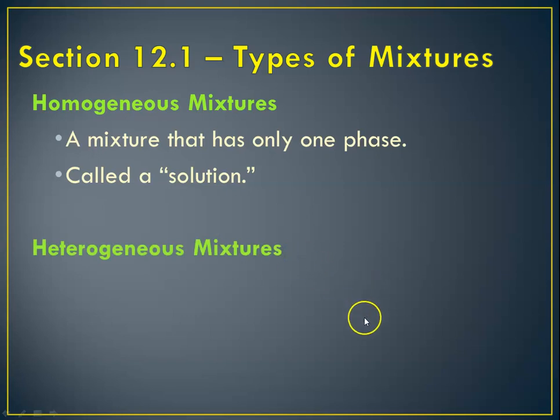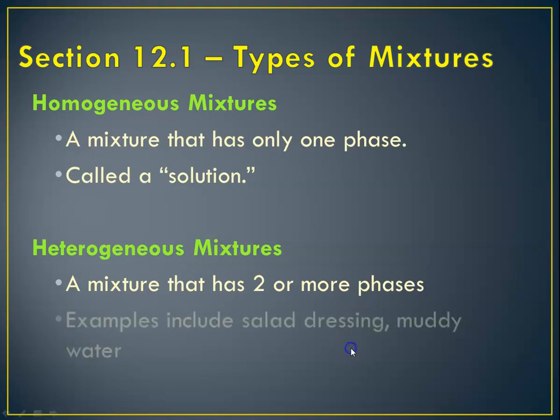And the other type that we talked about were heterogeneous mixtures. Heterogeneous mixtures are mixtures that have two or more phases, so recall from the beginning of the year: Italian salad dressing is an example, or a mixture of oil and vinegar, or oil and water. Muddy water—those are examples of heterogeneous mixtures.